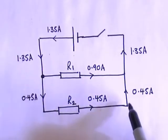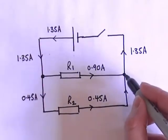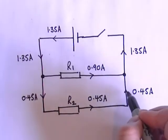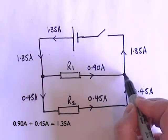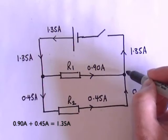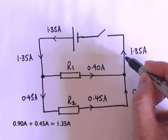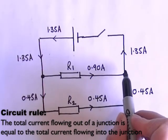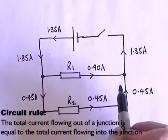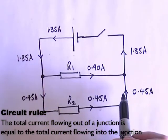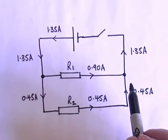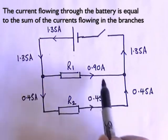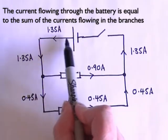Let's follow it round to the other side and look at what happens here. At this junction I've got a current of 0.90 amps and 0.45 amps flowing in, and those two currents are adding together to make a current of 1.35 amps flowing out. So at a junction we can say that the current flowing out is equal to the current flowing in. And similarly, the current flowing through the branches of the parallel circuit, if I add them together, gives me the current flowing through the battery.